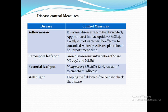Web Blight Control: Use seeds from disease-free crop. Mulching reduces disease incidence. Maintain low crop population density and wide row planting. Spray Dithane Z-78 at the rate of 2 kg in 1000 liters of water per hectare.